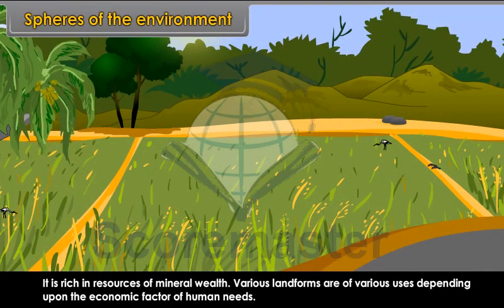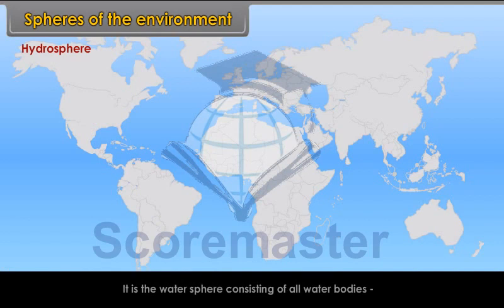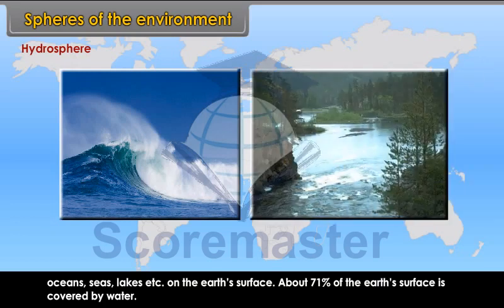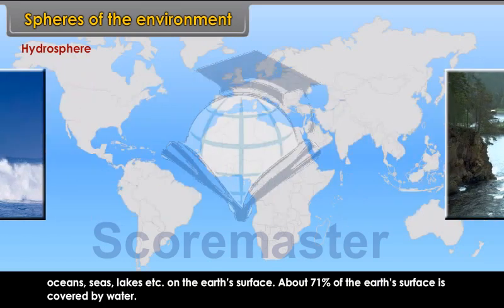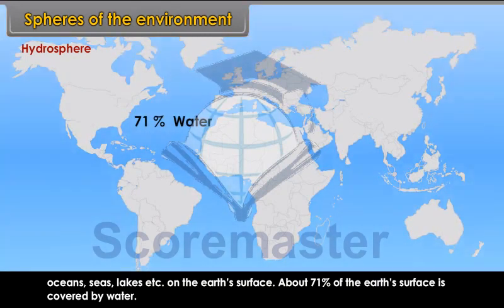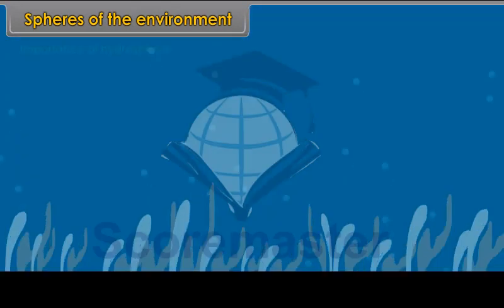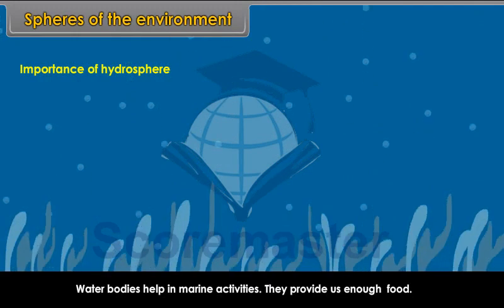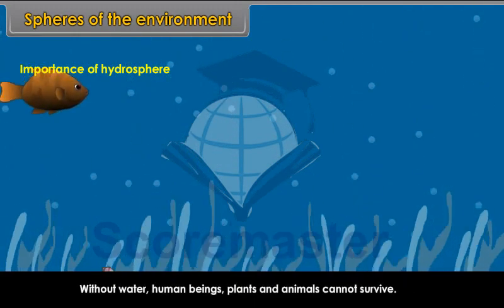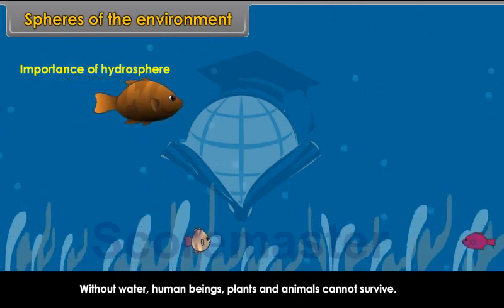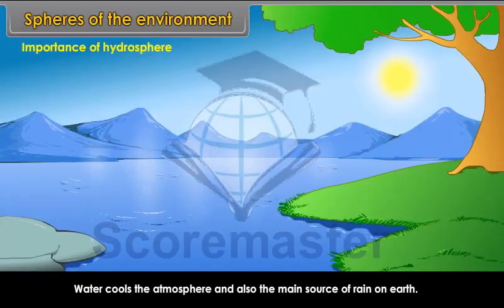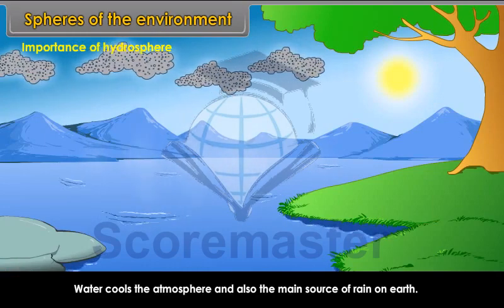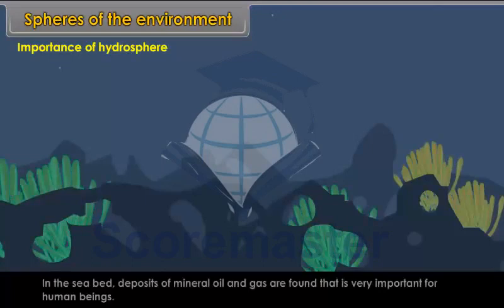Hydrosphere. It is the water sphere consisting of all water bodies — oceans, seas, lakes, etc. — on the earth's surface. About 71% of the earth's surface is covered by water. Importance of hydrosphere: water bodies help in marine activities, provide enough food, and without water, human beings, plants and animals cannot survive. Water cools the atmosphere and is also the main source of rain on earth. In the seabed, deposits of mineral oil and gas are found, which are very important for human beings.